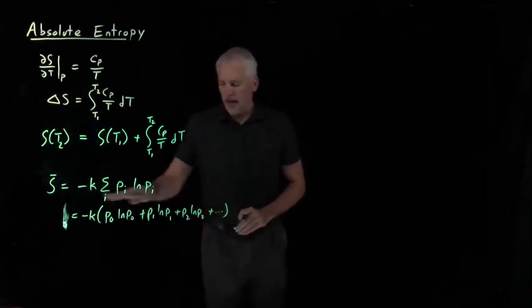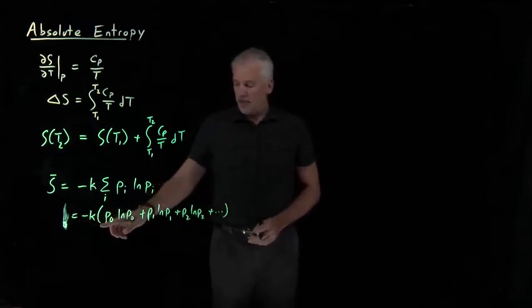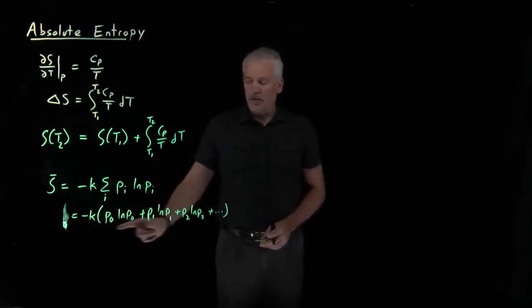and so on. So if I just write out that sum explicitly, it's minus K times the sum of these P log P's for each of these individual states.